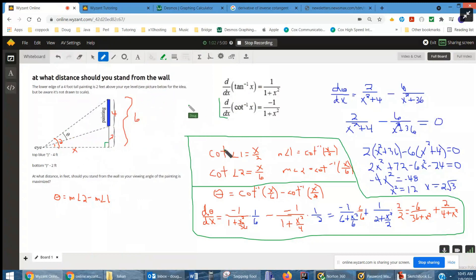So what's true is that the cotangent of angle 1 is equal to adjacent over opposite, x over 2, which means that angle 1 is equal to the inverse cotangent or arc cotangent of x over 2.